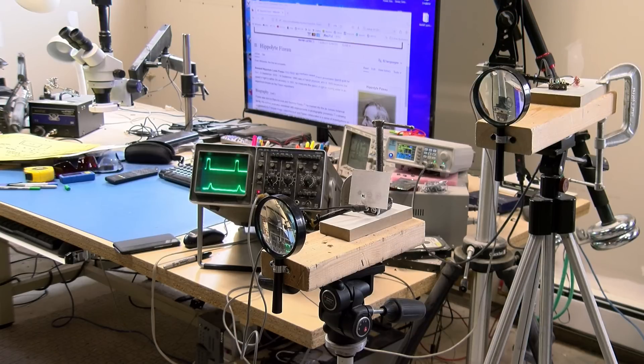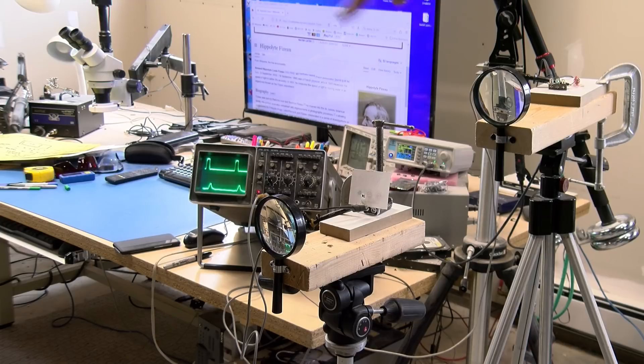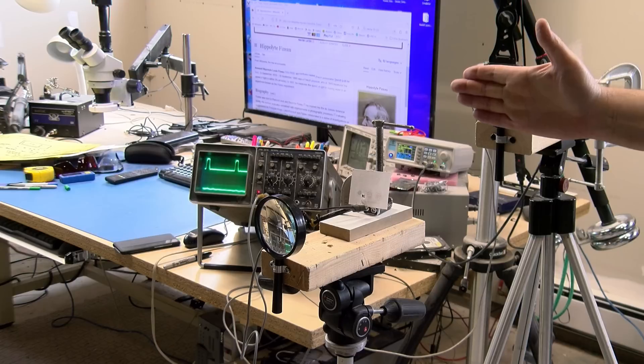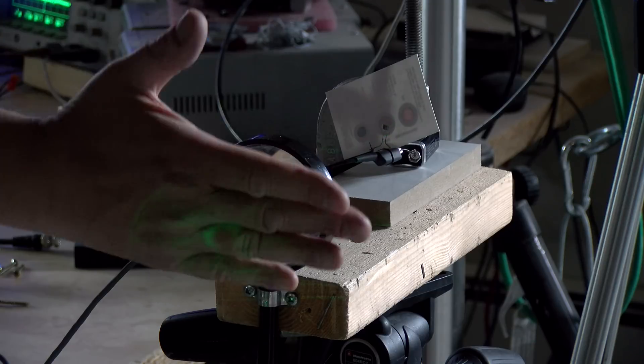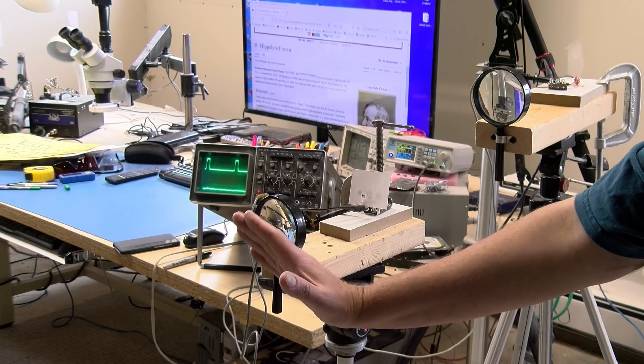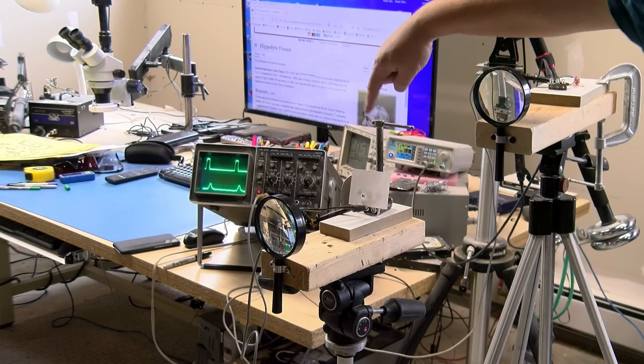The first thing we need to do is prove that the lower scan on the scope is indeed the result of the light leaving here, going to the end of the basement and coming back. If I put my hand in front of the transmit magnifying glass, the waveform disappears. If I do the same thing for the receive one, the waveform also disappears. Indeed those peaks we're seeing are from the light at the end of the basement.